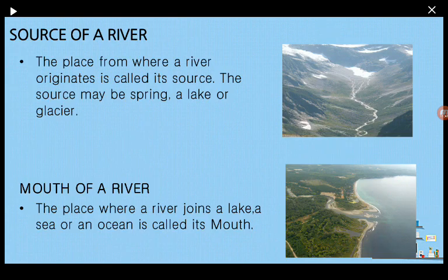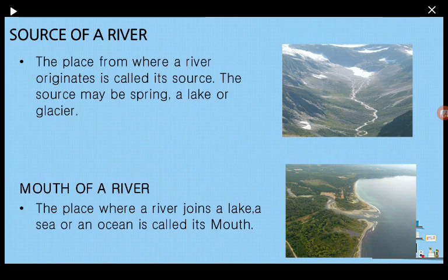Before heading further into rivers, let us learn some important terms used in rivers. Number one: source of a river. A place from where a river originates is called its source — meaning the place where the river starts. In the image you will find small streams starting from the melting of snow, which converts into water and starts flowing, forming into different streams and later forming a larger water body known as a river. The source might be a spring, a lake, or even a glacier.